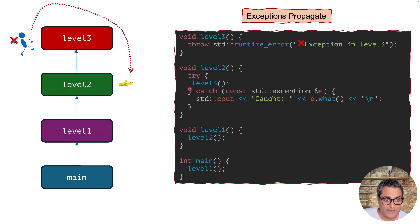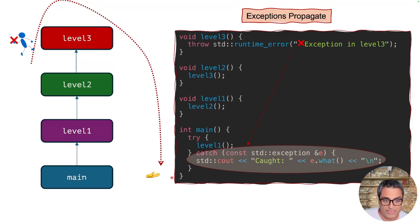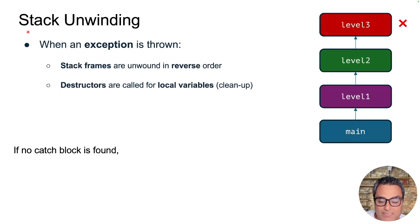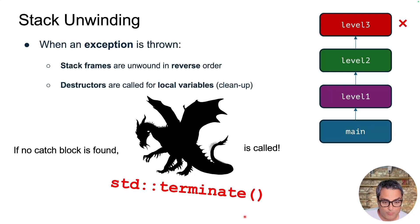Once level 3 throws an exception, we can either catch it at level 2 by putting the level 3 call inside a try-catch block, or alternatively catch it at level 1, or even let it pass through and catch it in the main function. The fact that exceptions propagate is a great thing. Once an exception happens, a process called stack unwinding is performed — stack frames are unwound in reverse order, and the destructor of all local variables is called as we exit each function. If no catch block is found, std::terminate will be called and your program will be terminated.